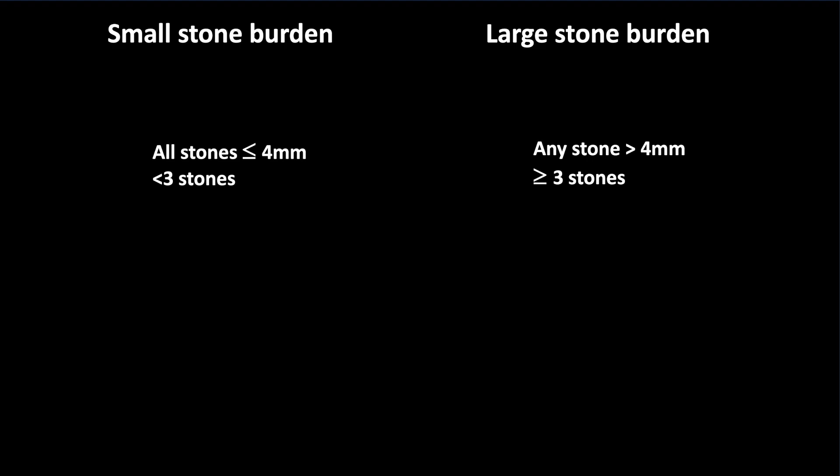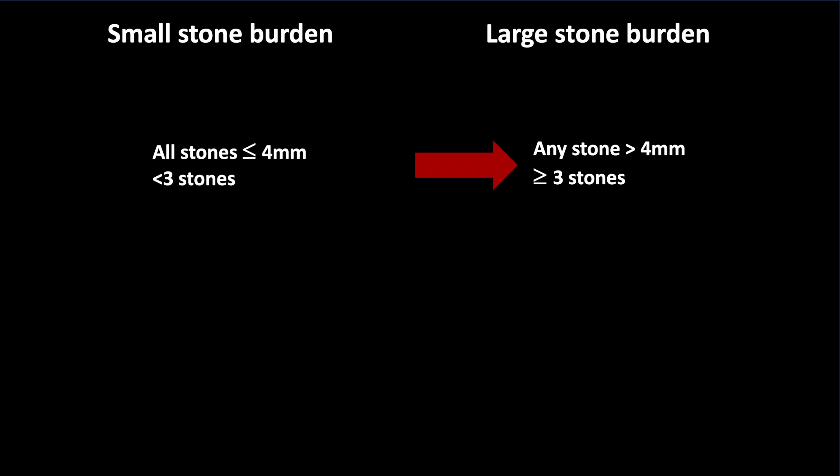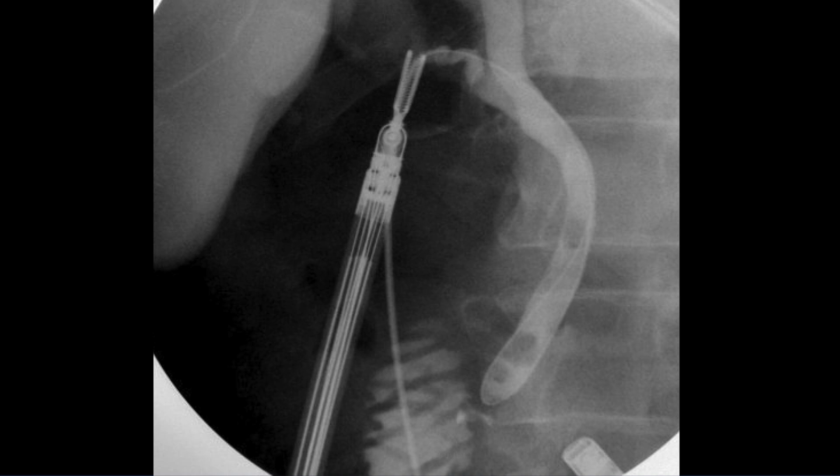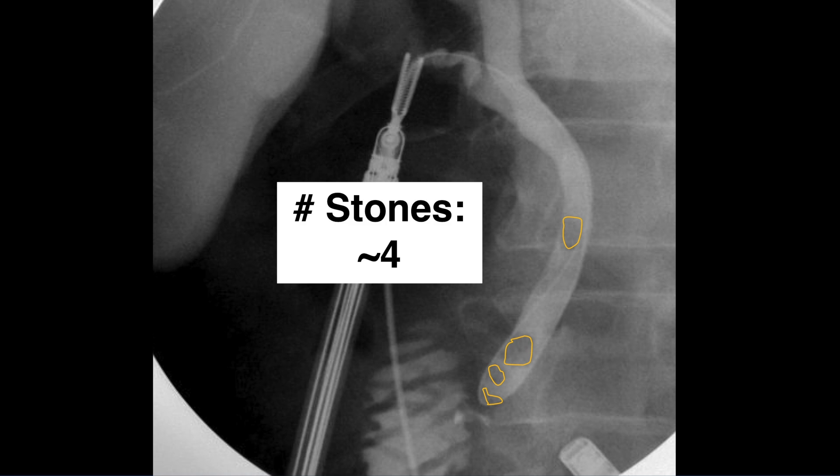Which intervention you select is based on the stone burden. A small stone burden is defined as all stones 4 mm or less and fewer than 3 stones. A large stone burden is defined as any stone bigger than 4 mm or 3 or more stones. To estimate the stone burden, first count how many stones are present, and then for size, use the 8 mm robotic trocar to compare to the biggest stone.